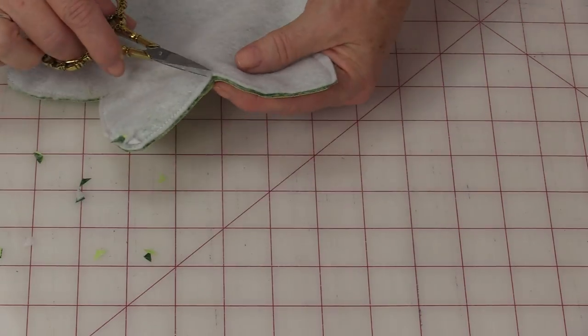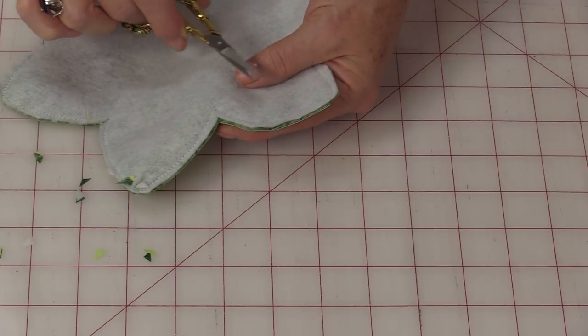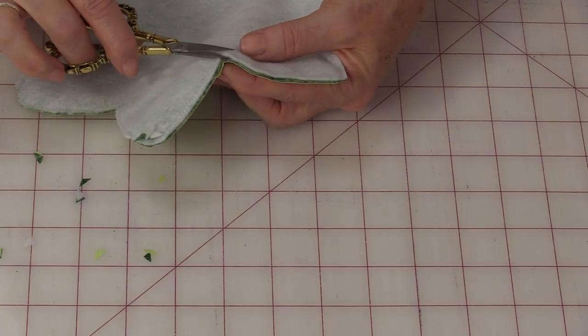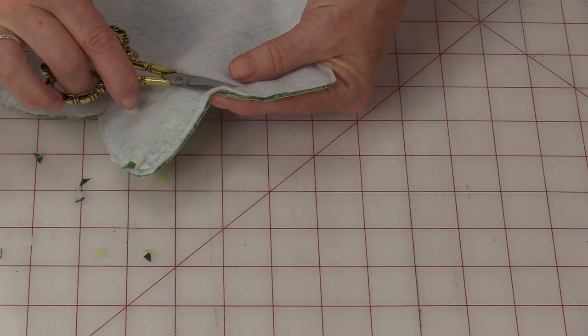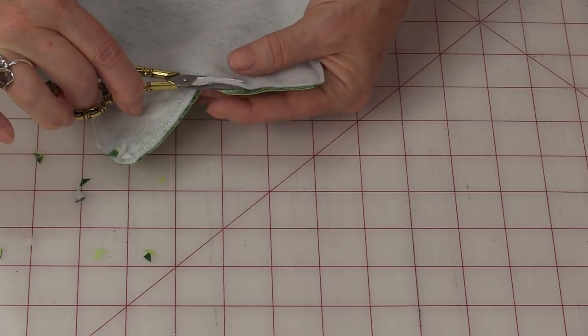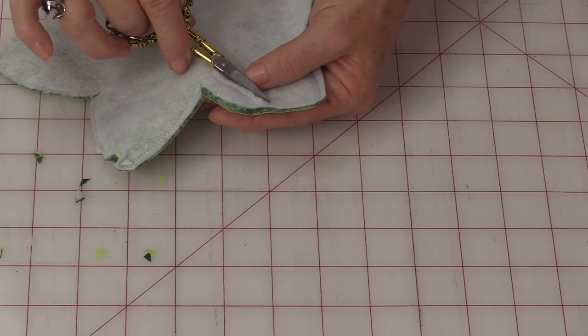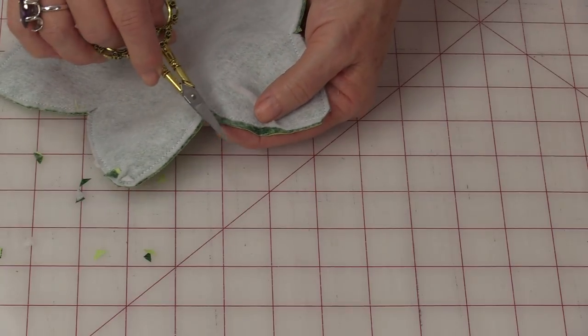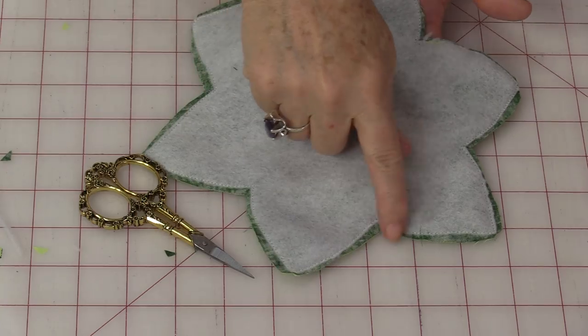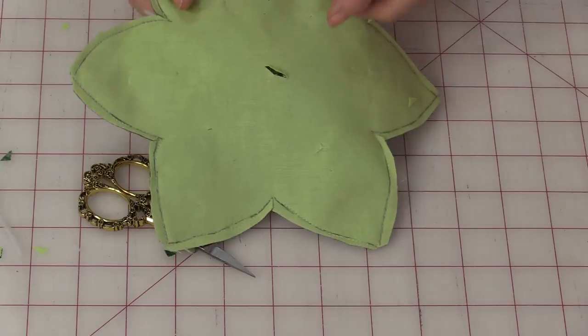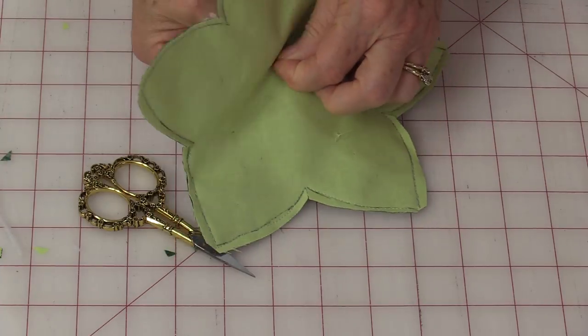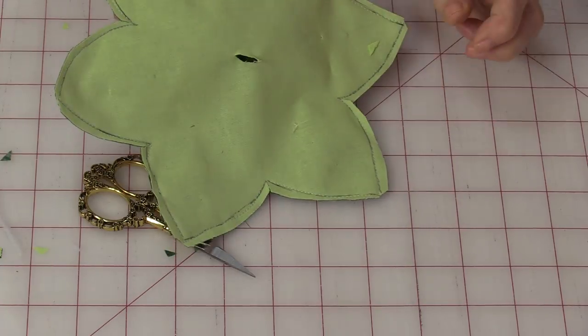I like to trim the batting right up to the thread line. If you get a little pair of scissors, you can go right along that edge. I'm only trimming the batting, I'm not trimming any of the fabric. With that batting trimmed away and that hole in the fabric, I'm now going to be able to turn it right-side out.